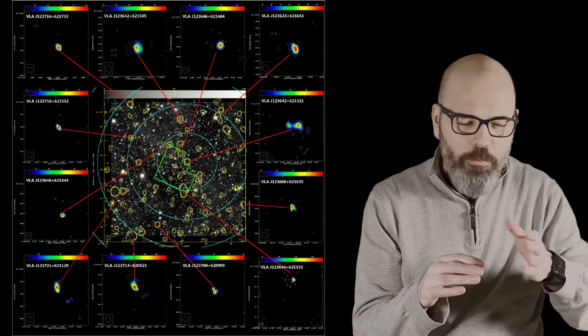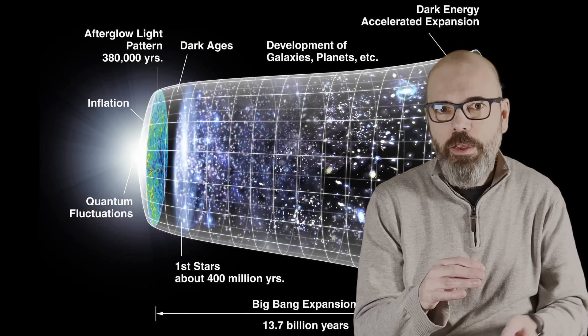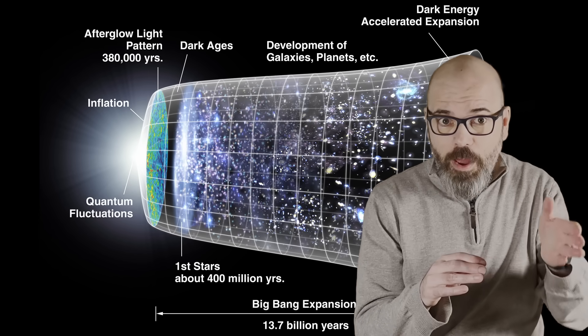And the results break something cosmology treats as sacred. The direction of this dipole lines up almost perfectly with the CMB, exactly as the standard model says it should. But the speed does not. Not even close.